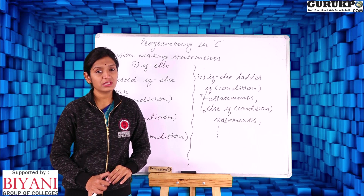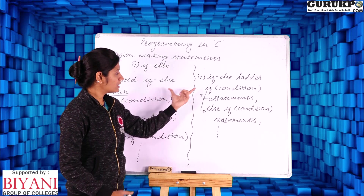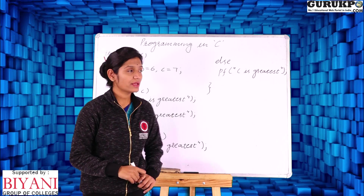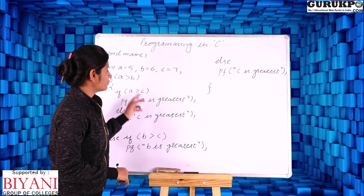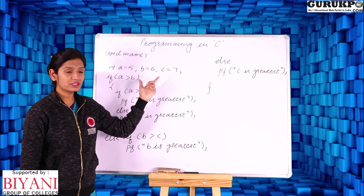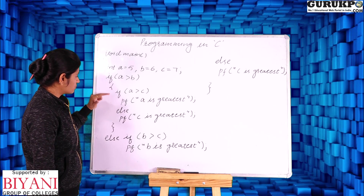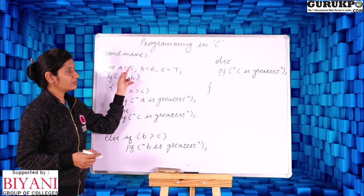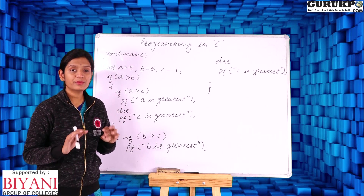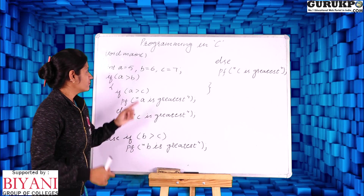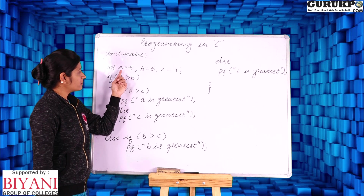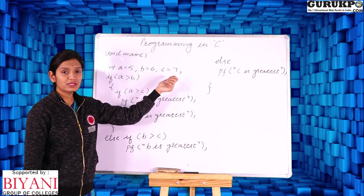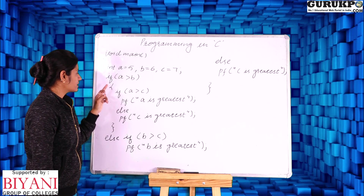Now let us see an example in which both types of statements are used. This is a program to compare three numbers and print the largest one. We have taken three variables a, b, and c, with values 5, 6, and 7 respectively.